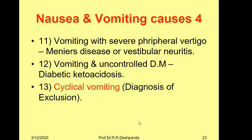Another serious cause is vomiting with uncontrolled diabetes mellitus. If the patient is not taking regular insulin or tablets, not following dietary guidelines, and has glycosylated hemoglobin around 10, they may develop diabetic ketoacidosis with blood sugar near 800-1000 mg per 100 ml. Additionally, if all other causes are ruled out and vomiting occurs periodically without a clear cause, it is called cyclical vomiting or idiopathic vomiting.